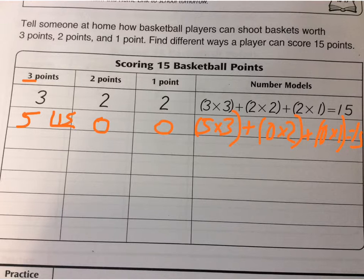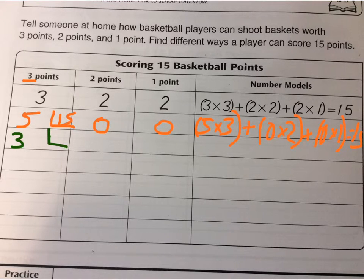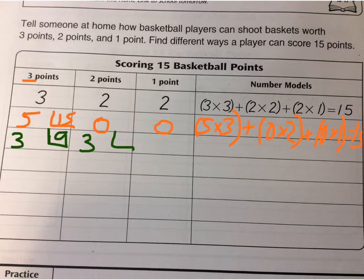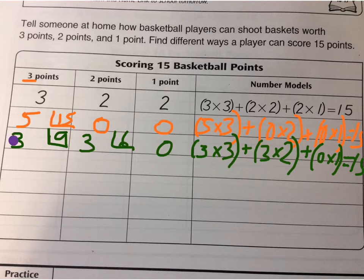That's one easy way. Let's choose a number less than 5 for the threes — how about 3. Three times 3 gives me 9. Now I need 6 more, so 3 two-pointers gives me 6, and I have 0 left for one-pointers. So 9 plus 6 plus 0 is 15, and my number model is 3 times 3 plus 3 times 2 plus 0 times 1 equals 15. Let's try one more.